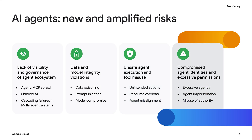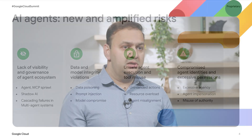The fourth risk category is compromised AI agent identities and excessive permissions. These include the risk of agent impersonation, unauthorized access resulting from excessive agency, and the misuse of delegated authority by autonomous agents. Gartner predicts that over 50% of successful attacks against AI agents will exploit access control issues, resulting in widespread system compromise and data breaches.